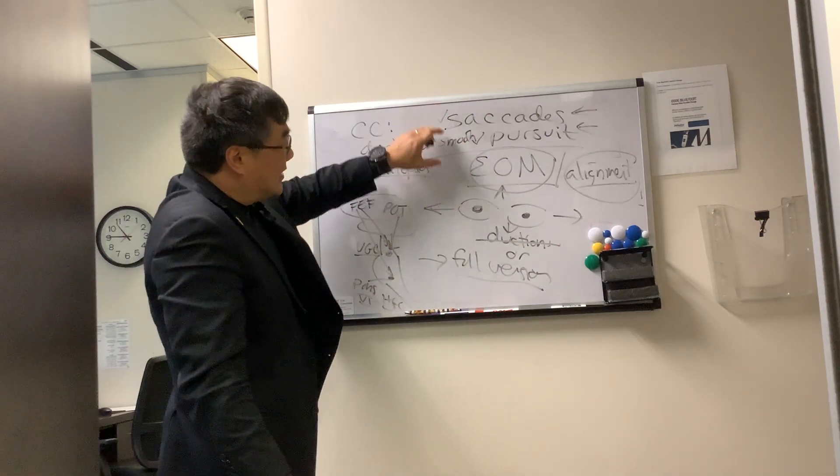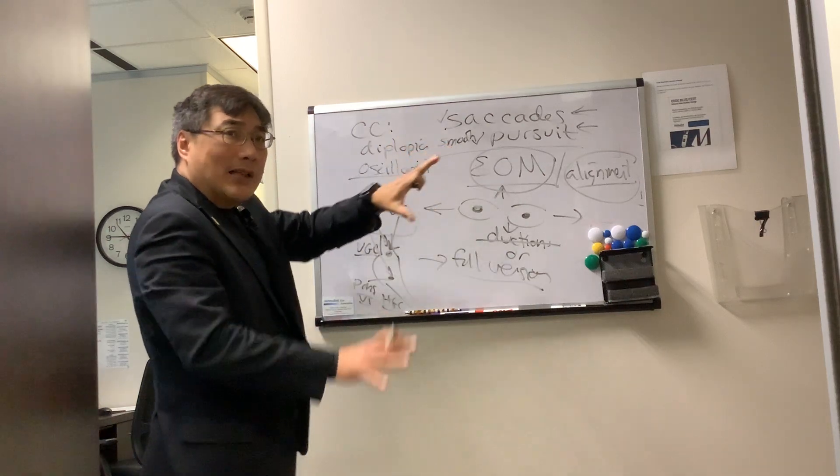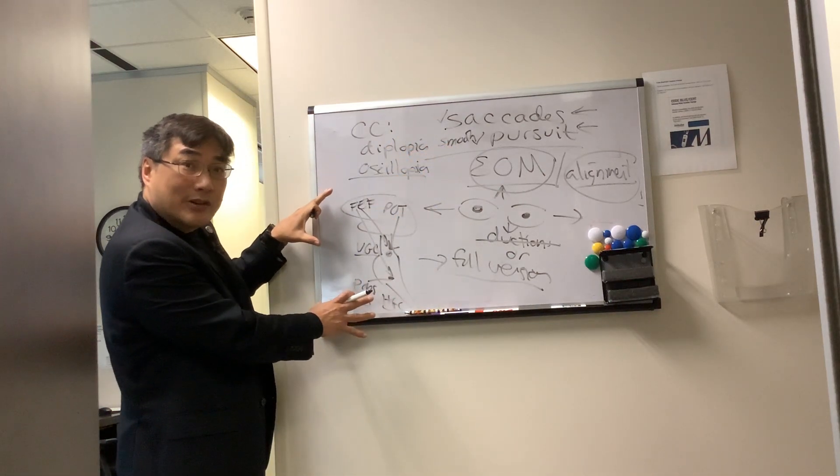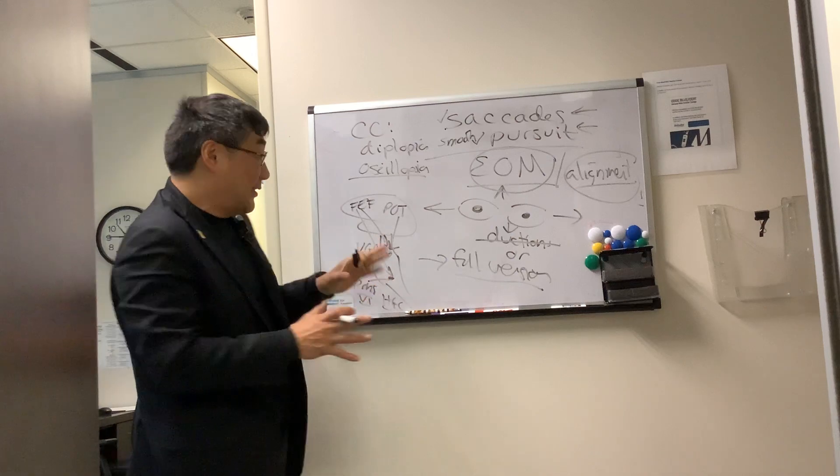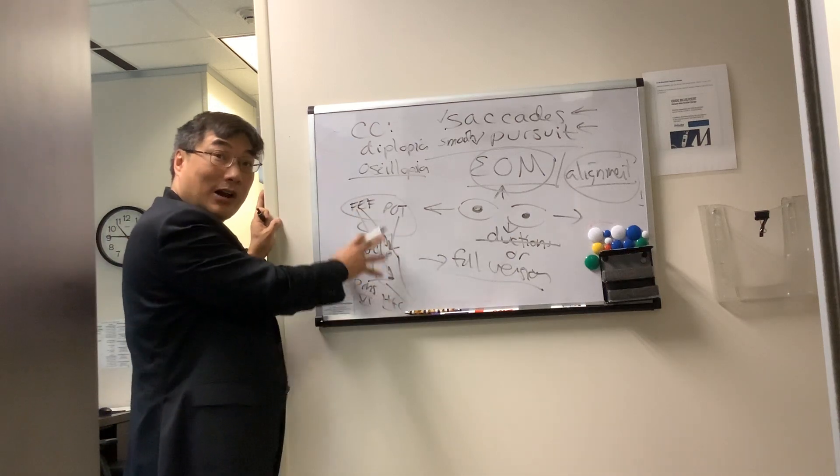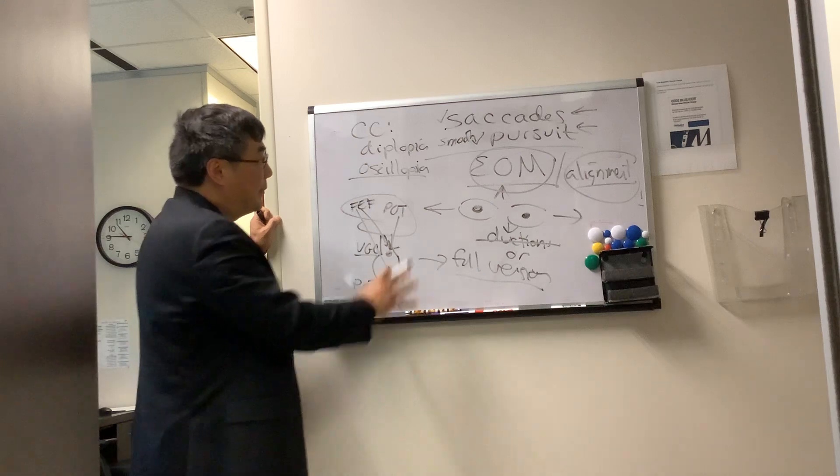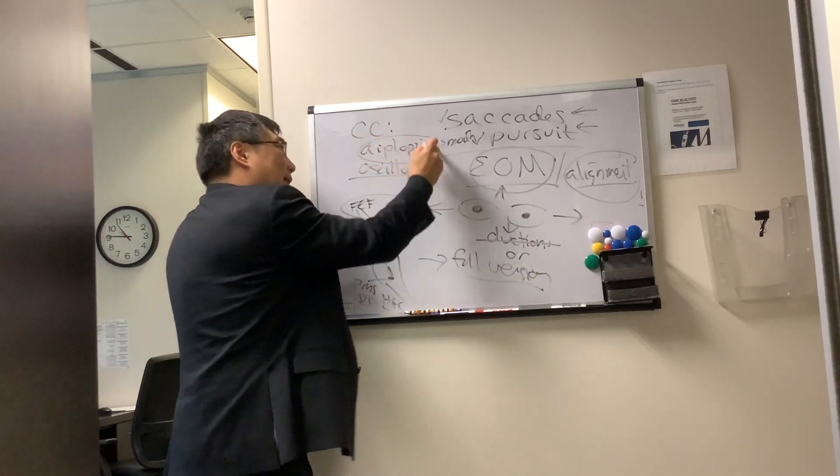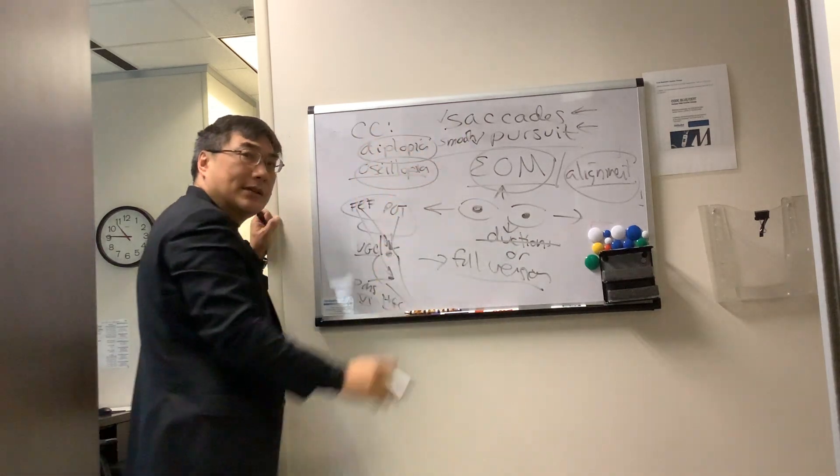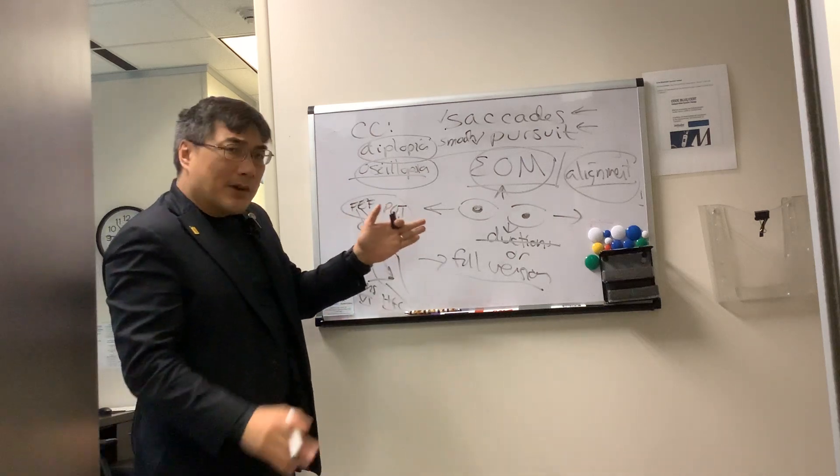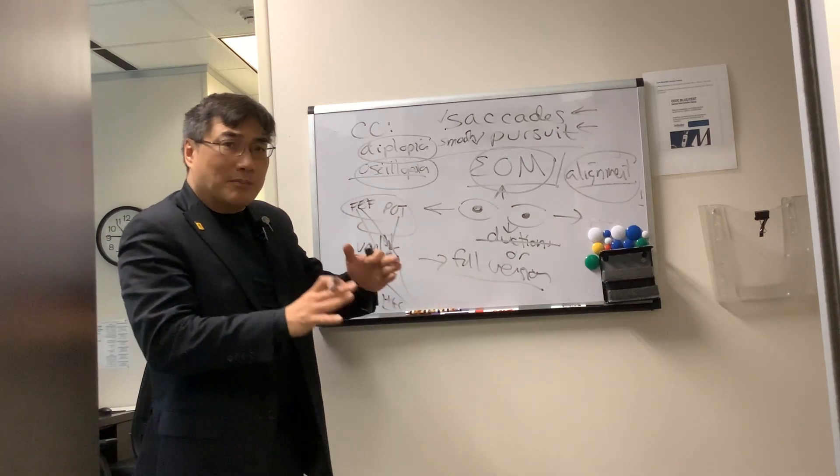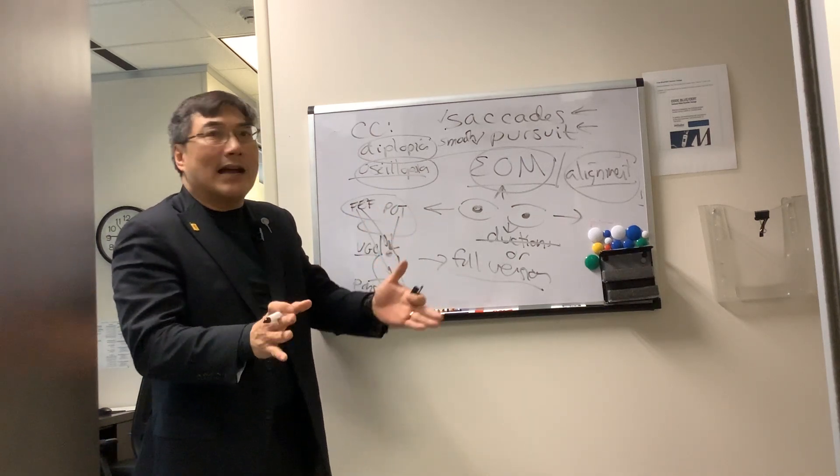So we test the saccade and the pursuit when people have a problem in their neural network. It helps us to establish that there's some connection problem. It doesn't tell you what the cause is, but it helps to understand complaints like diplopia and oscillopsia. And so some conditions, the versions might look completely full, but they still have a problem.